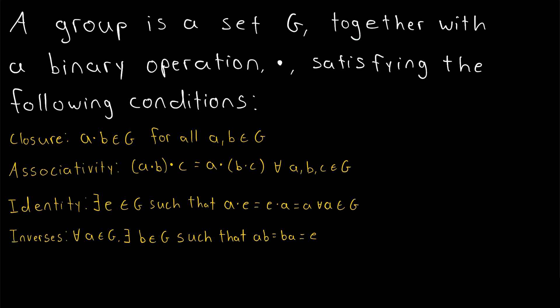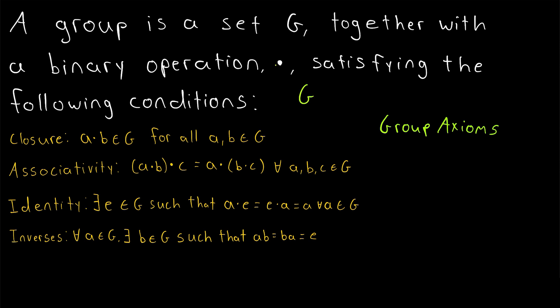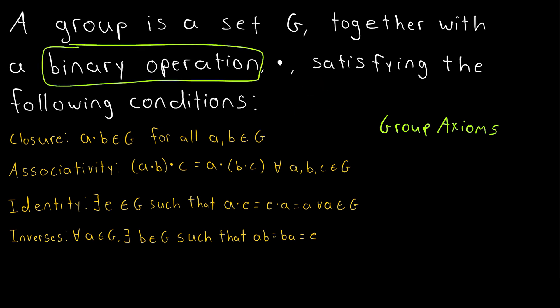A group is a set G, together with a binary operation — just generically represented by a dot — satisfying the following conditions. These four conditions are often called the group axioms. When we're talking about a group, what we're talking about is a set, which is an unordered collection of distinct objects, and some binary operation acting on that set that follows four rules. This is a type of algebraic structure, and groups are a very common one, which is why studying them is very useful and important.